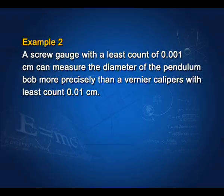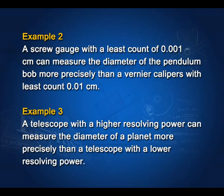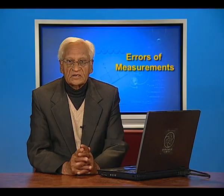A screw gauge with a least count of 0.001 centimeter can measure the diameter of a pendulum bob more precisely than a vernier caliper with least count 0.01 centimeter. A telescope with a higher resolving power can measure the diameter of a planet more precisely than a telescope with a lower resolving power. This was about precision.